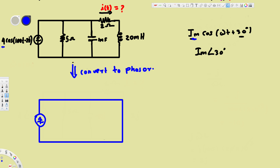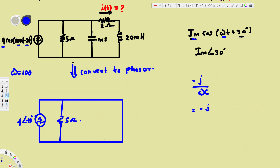We also have a capacitor. When we convert a capacitor to phasor, it becomes -j/(ωC). Omega is 100 in our case, and the capacitor is one microfarad, which is 1×10⁻³. This gives us 10 on top, so the capacitor becomes -10j — that's our new capacitor impedance.